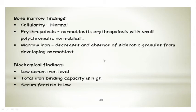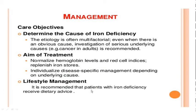Then you have the biochemical findings: serum iron level is low, the total iron binding capacity (TIBC) is relatively high, and serum ferritin is obviously low.